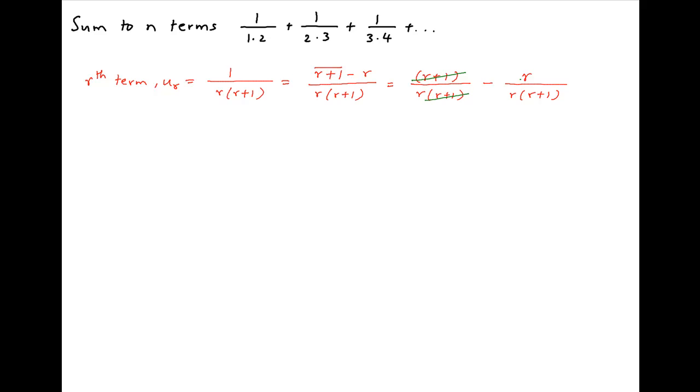In the first term, r plus 1 cancels. In the second term, r cancels across the numerator and denominator. The r-th term, u_r, can therefore be written as 1 upon r minus 1 upon r plus 1.